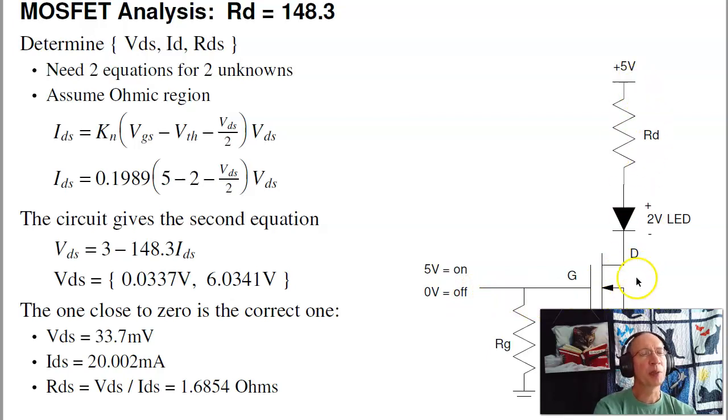If I want to be a little bit more accurate, I need two equations, two unknowns. One equation is the Mossbett equation. I have two unknowns, VDS and IDS. They're related by this equation in the ohmic region. I have a second equation, this circuit. I have 5, or VDS is 5 minus 2, which is 3, minus I times R. That's 148.3 ohms. If I solve these two equations, two unknowns, I get two solutions.